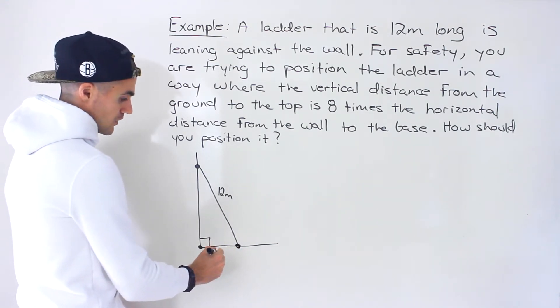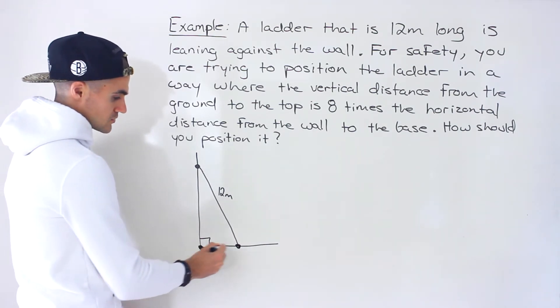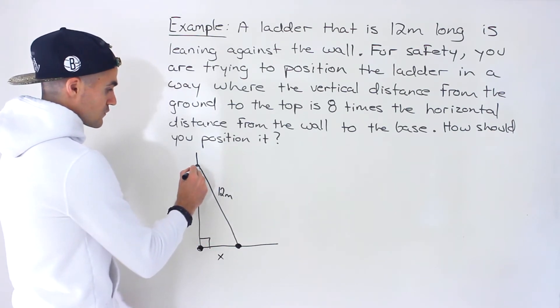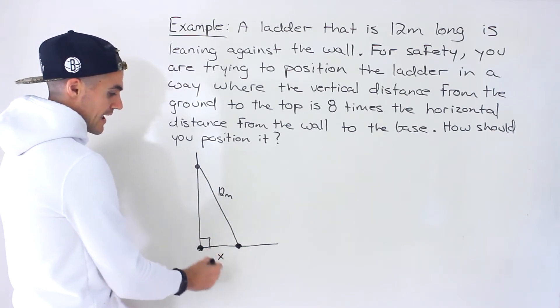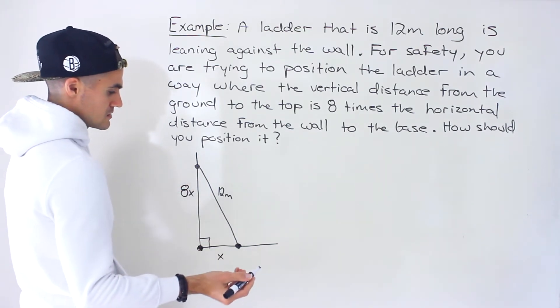We can introduce some variables here. If we let x equal this horizontal distance from the base of the ladder to the wall, then this vertical distance has to be eight times that distance.